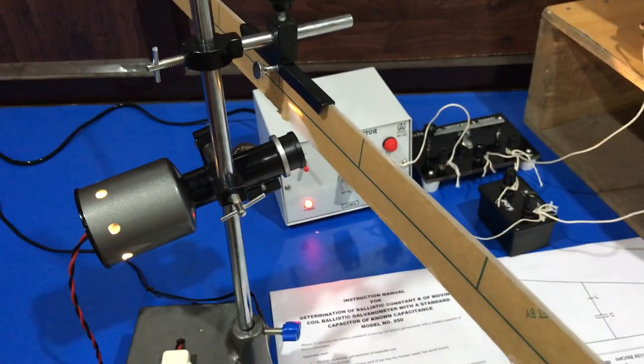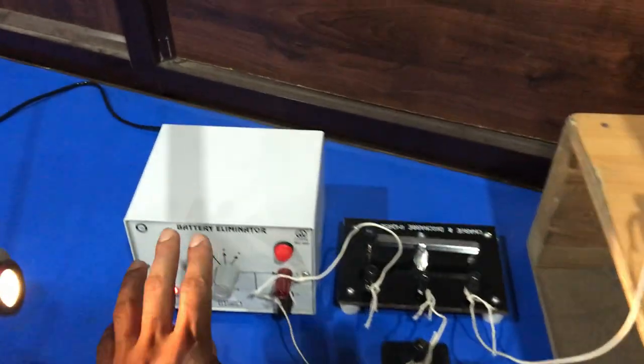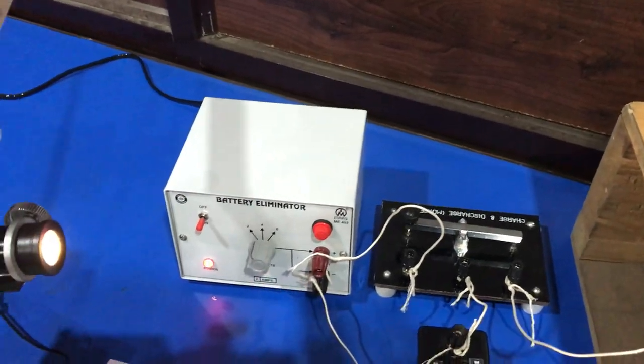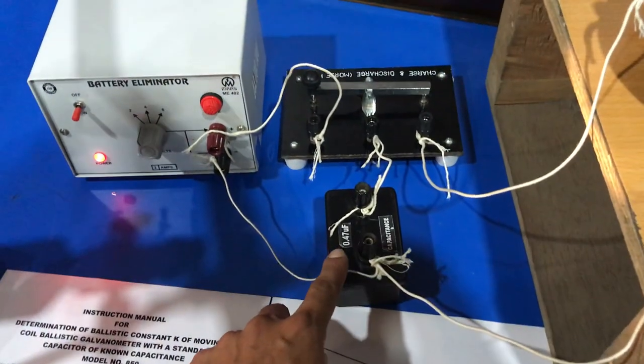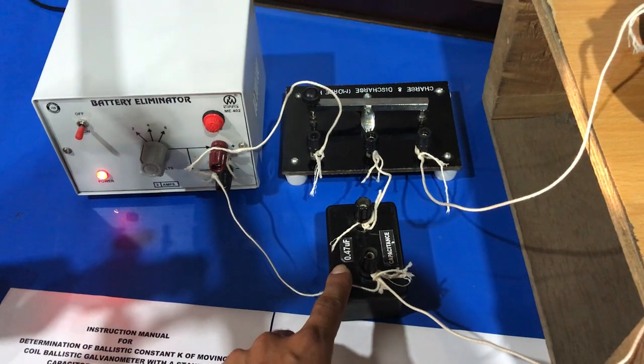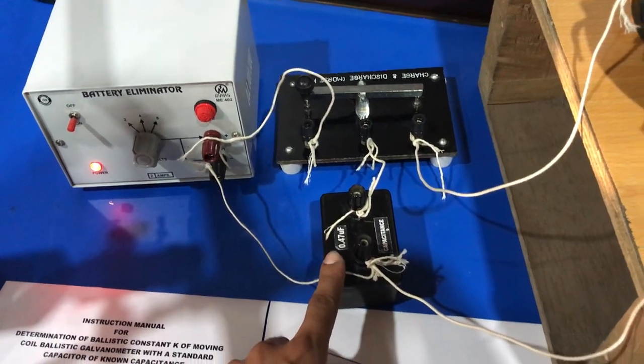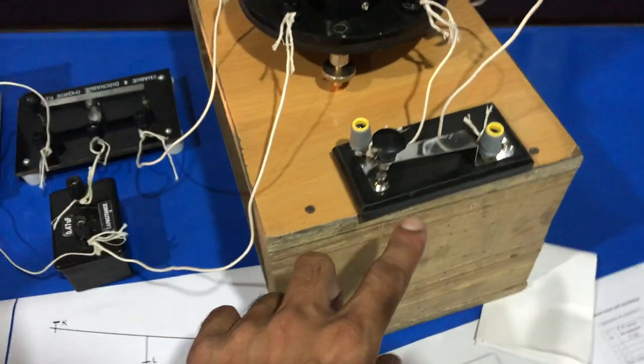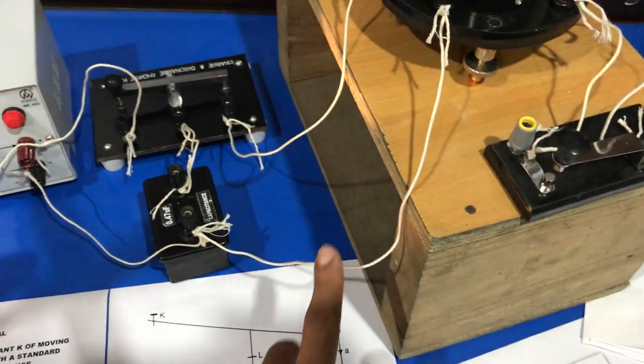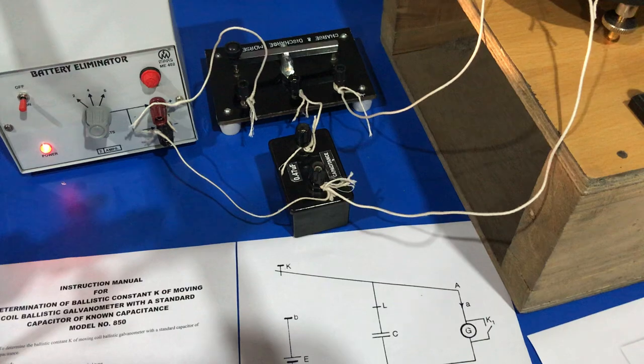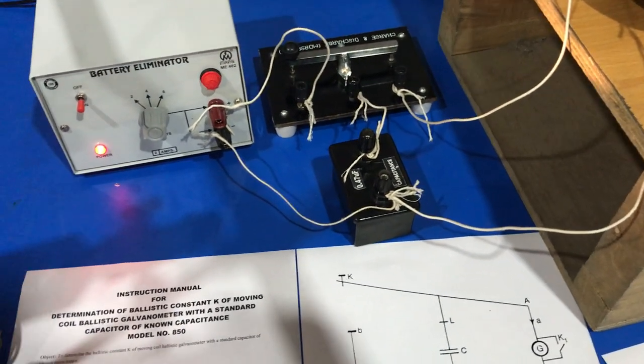We also need a battery eliminator of 2 to 6 volts, a Morse key, a standard capacitance of 0.47 microfarad, a tapping key, and DC connecting wires of the order of 1 to 2 meters. Now I will show the connections.